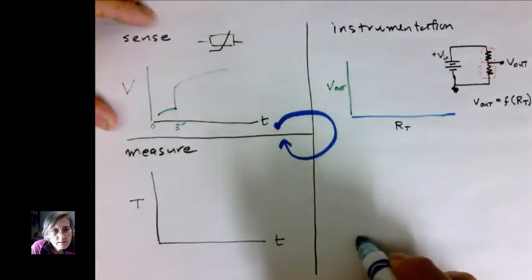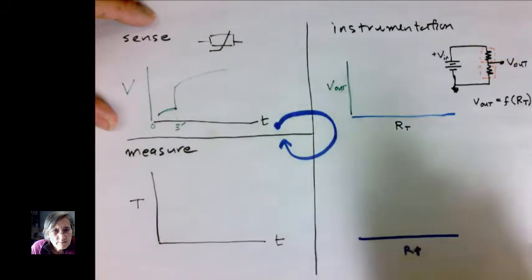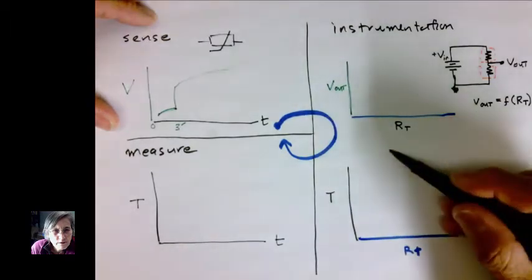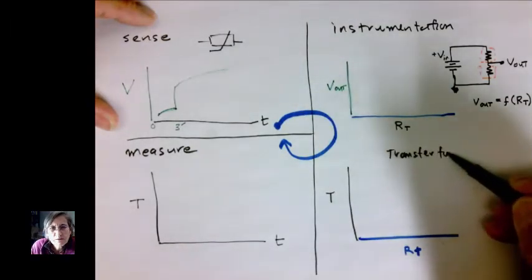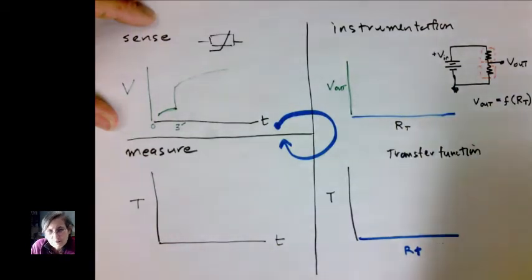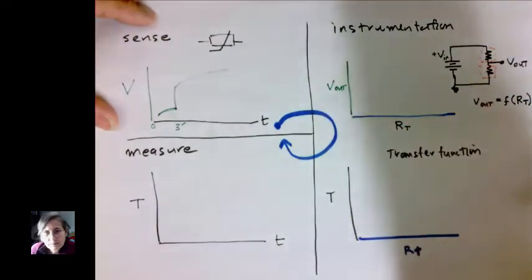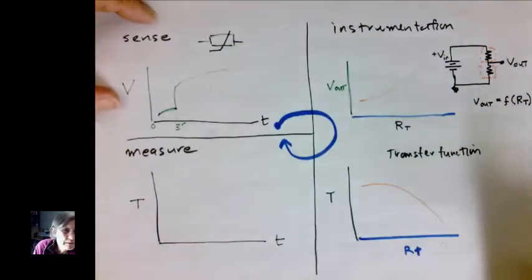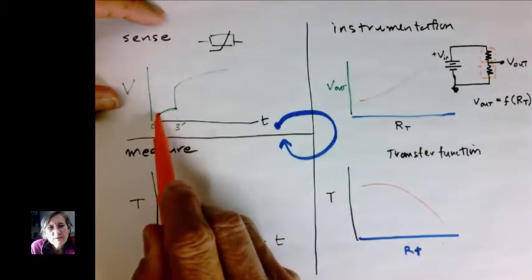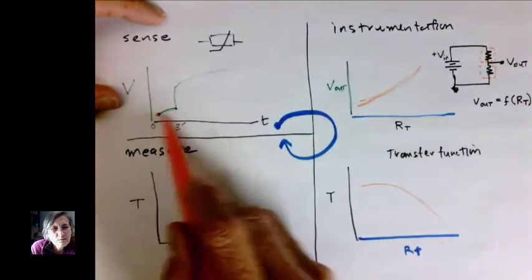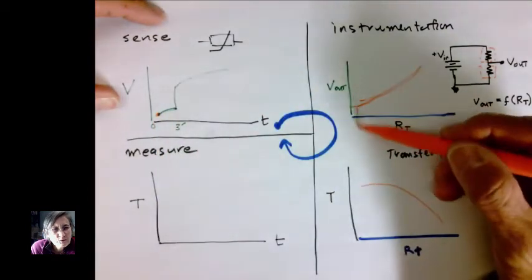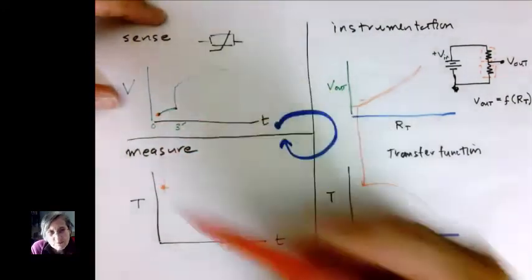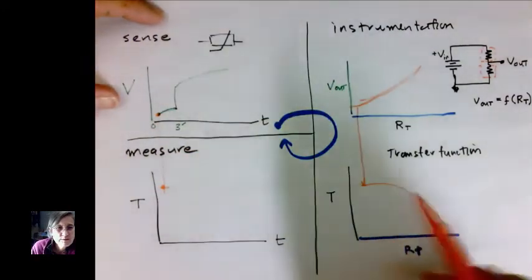Now to get to our desired quantity we need to convert that V out value to a temperature value and we do that by using the transfer function of the thermistor and that is provided in the documentation. I'm just going to add some curves here, these may or may not be right but I'm just trying to illustrate that we take the data point in one domain in the voltage time domain and we convert it through the voltage resistance domain and then the temperature resistance domain to get to the temperature time domain.